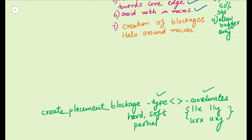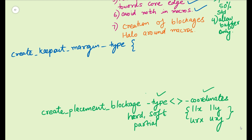For creating the keep out margin, the command is 'create_keep_out_margin'. After that, you also specify '-type', which could be 'outer' or 'inner'. So these are the two types — it could be an inner keep out margin or an outer keep out margin of the cells. In placement blockage, the type is hard, soft, or partial, whereas in keep out margin, the type is outer or inner.